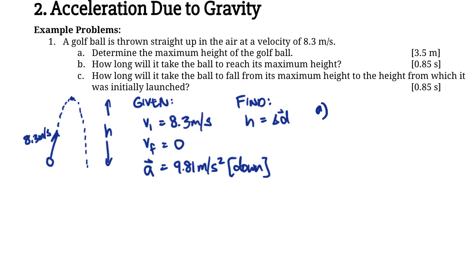What's missing? Time — we don't care about time. So which equation doesn't include time? The answer is VF squared equals VI squared plus 2A delta D. This is the equation that doesn't include time, and we also know our VF is zero.